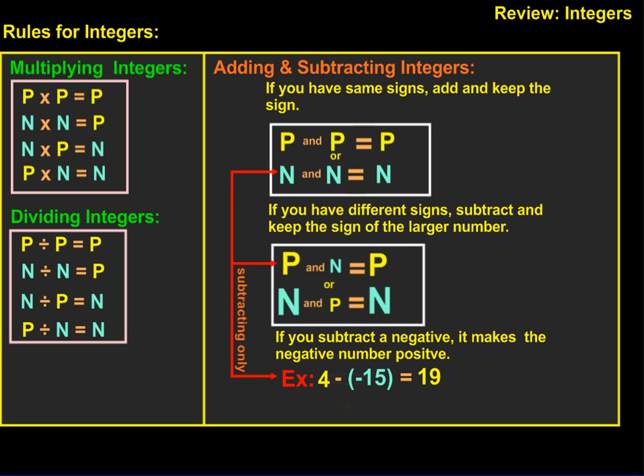You have multiplying integers. If you have a positive times a positive, your answer will be positive. If you have a negative times a negative, your answer will be positive. If you have a negative and a positive, or a positive and a negative — any combination where you have two different signs — your answer when multiplying is always going to be negative.